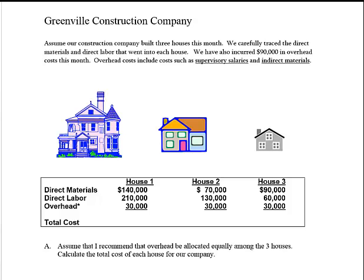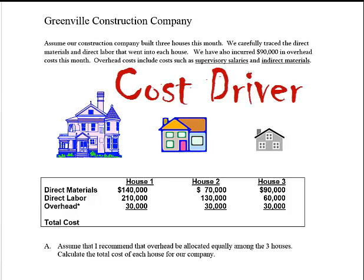In Part B, I asked the class to come up with a more fair way to allocate overhead, once they agree it doesn't seem fair to allocate it equally given the houses are different sizes and complexities. One student proposal: maybe there's a relationship between how much direct materials and direct labor went into a house and how much supervising and indirect materials that house used. That's making an argument about what's called a cost driver — what drives the cost of supervision or indirect materials?